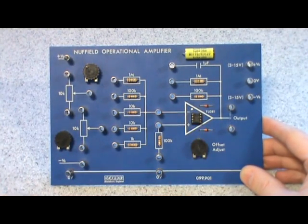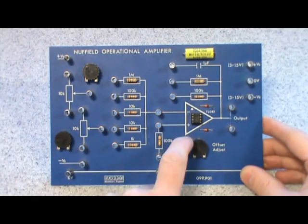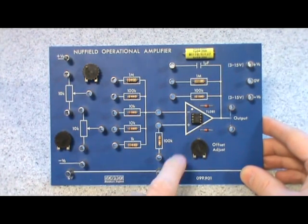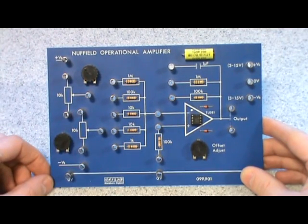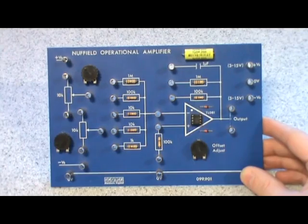There's the op-amp itself. There's the symbol, the triangle, with an inverting input with a negative sign, and the non-inverting input with a positive sign.